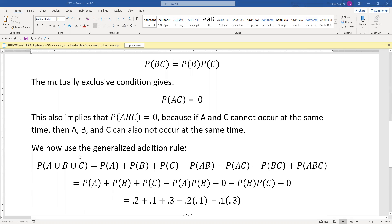We now use the generalized addition rule. We have to find probability of A union B union C, and we know that equals P(A) plus P(B) plus P(C), then you subtract the pairs minus P(AB) minus P(AC) minus P(BC), and then you add the triplet P(ABC).